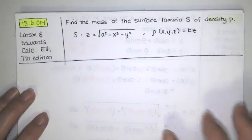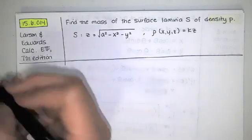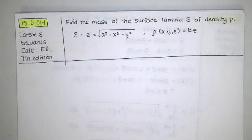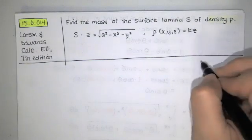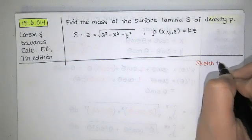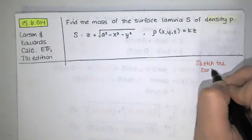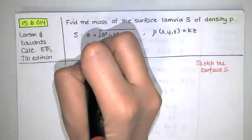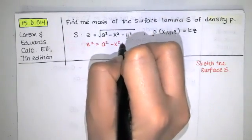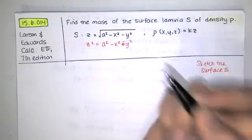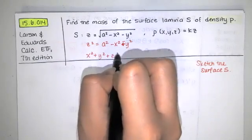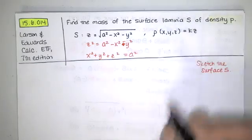The way I would solve this is by first sketching the surface. One way to sketch it is by rearranging that equation so it looks like one of the surfaces we've already studied. I would square both sides and then add x squared plus y squared to both sides, giving us x squared plus y squared plus z squared equals a squared.